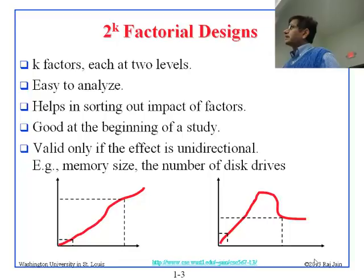This helps in sorting out the impact of the factors. This is good at the beginning of a study. When you start studying, two raised to k designs are good, because then you just do two extremes. Valid only if the effect is unidirectional. If you know that the effect is unidirectional, as opposed to if it is like this, then you are going to miss conclusion. In this case, you really need three levels minimum.